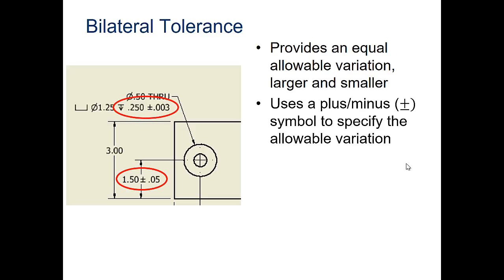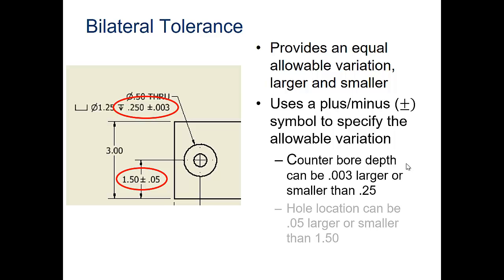Bilateral tolerances give you a tolerance that you can go plus or minus on. The top one is .003 plus or minus, and the bottom one is plus or minus .05. They provide an equal allowable variation, larger and smaller, using a plus-minus symbol to specify the allowable variation. Counter and bore depth can be .003 larger or smaller than .25, and the hole location can be .05 larger or smaller than 1.5.